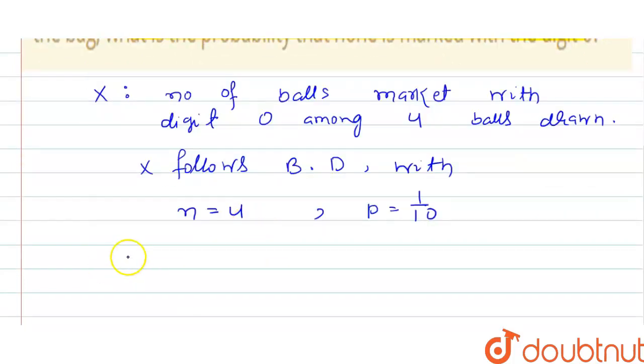And we know how to find the value of Q, that is 1 minus P. Now the value of P will be 1 by 10. Then the value of Q will be 9 by 10.